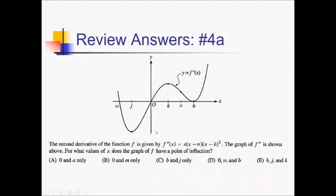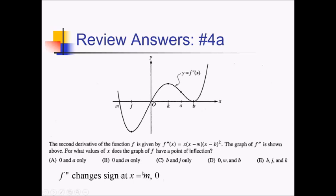For this problem, we have the second derivative of some function graphed, and we want to know what values of x give the graph of f a point of inflection. We're looking for a sign change in f double prime. According to the graph, f double prime is changing signs at m and also at zero. At point b, f double prime equals zero but there's no sign change, so that's not an inflection point. We only have points of inflection where f double prime changes signs — so POIs at m and zero — answer choice B.